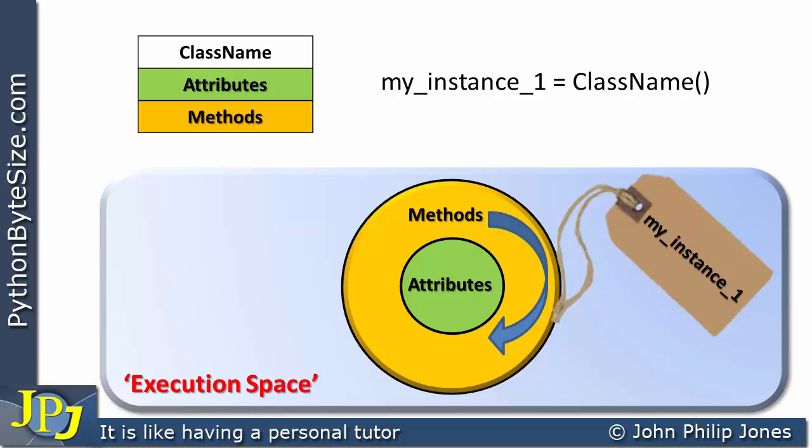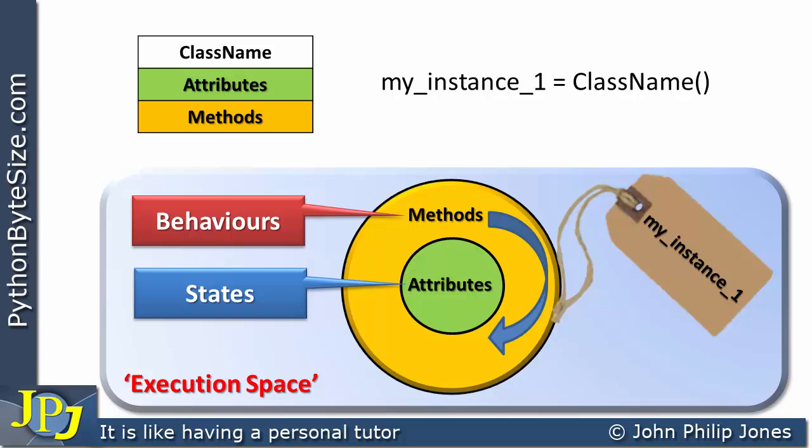When you're reading around the subjects of classes and objects, you will often come across the following words: state. Now state is really another word for attributes. And we've also got methods, and another word for methods are behaviors. In other words, an object has behaviors and it has state. And these behaviors and states are defined inside the class.